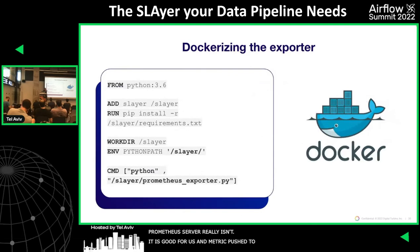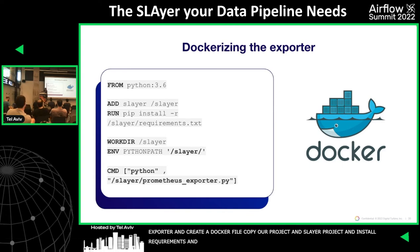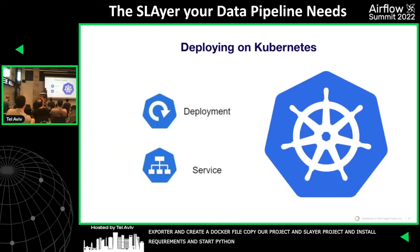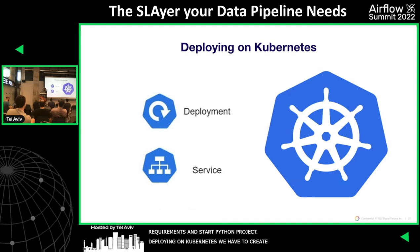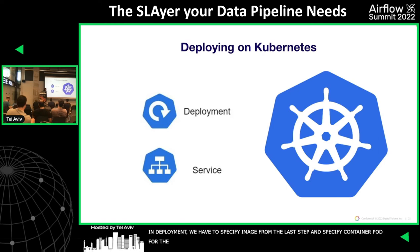Now we can dockerize our exporter. We create a Dockerfile, copy our project — our Slayer project — install the requirements, and just start our Python project. To deploy it on Kubernetes, we need to create two main YAML files: a deployment and a service. In the deployment, we specify the image from the last step, the container port for the Prometheus server, and the database connection for Airflow. The service serves our network.